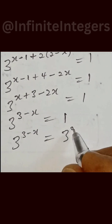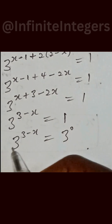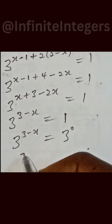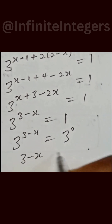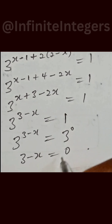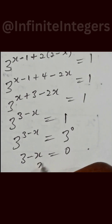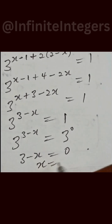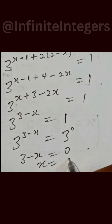Anything raised to the power 0 equals 1. Then we have to equate the exponents. We have 3 minus x equal to 0, and that means that x equals 3.